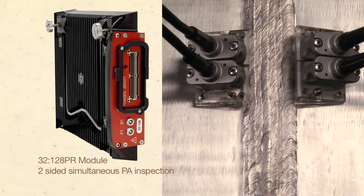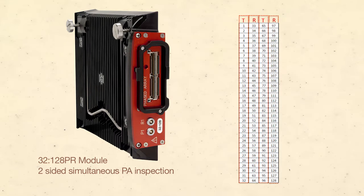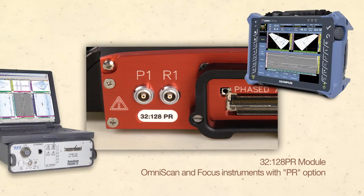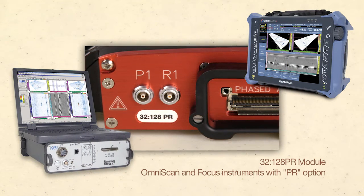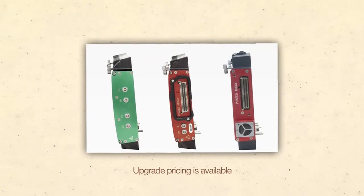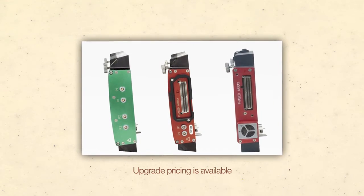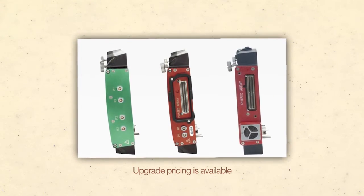Instrumentation to drive DMA probes requires the ability to transmit and receive using different elements or apertures, available in the OmniScan and Focus instruments with the pulsar-receiver or PR option. Upgrade pricing is available for standard or previous generation OmniScan modules.